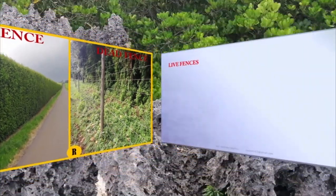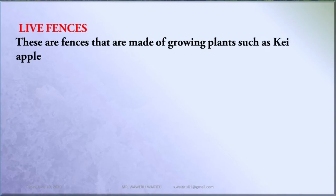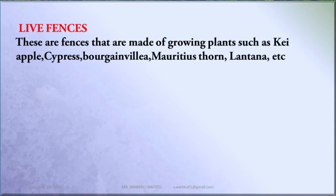Life fences are fences that are made of growing plants. For example, Kayeepo, Cypress, Bougainvillea, Mauritius Stone, Lantana, etc. They are normally used when marking boundaries.